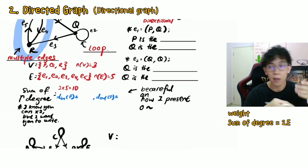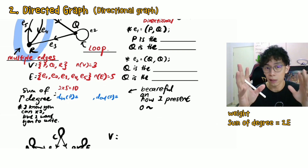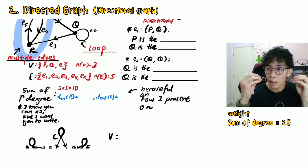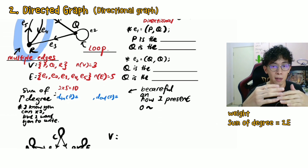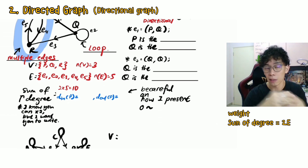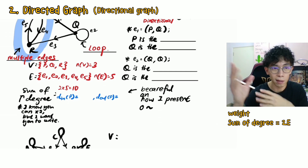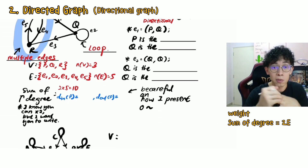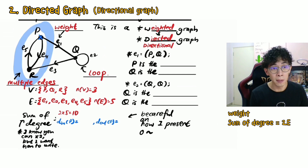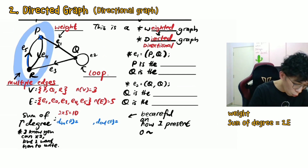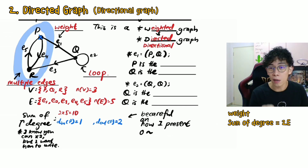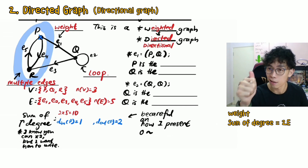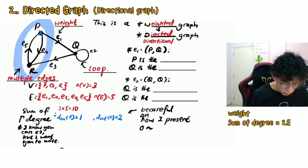Let's calculate degree-in and degree-out for vertex P. Degree-in for P: how many lines are shooting towards P? One — you can see that arrow pointing towards P. Degree-out for P: how many lines go out of P? Two. So one plus two gives a total degree of three for P.